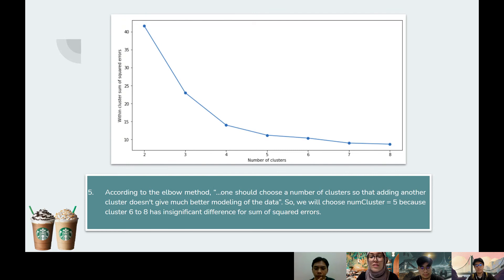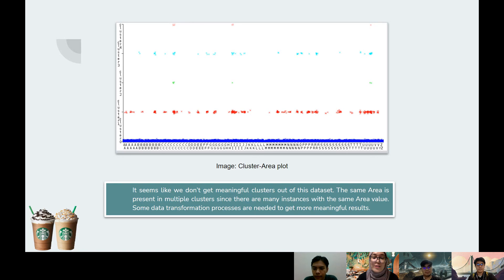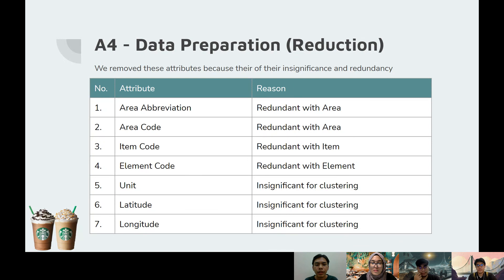Here is the result when we selected number of clusters equal to 5 — the final cluster centroids. It seems like we don't really get meaningful clusters out of this dataset because there are the same area presented in multiple clusters, since there are quite many instances with the same area value. In order to get a more accurate and meaningful result, we are going to do data transformation processes.